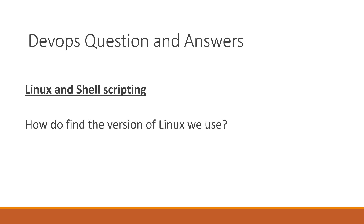We have different types of Linux with Red Hat based, like CentOS, Red Hat Enterprise Linux, Fedora, and Oracle Linux, etc. We also use different Debian based operating systems like Ubuntu, Kali Linux, etc. In this video, we will see how to find the version of the Linux we use in both these types of operating systems.